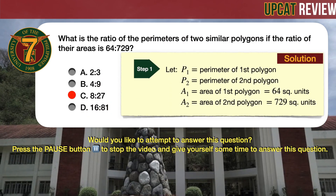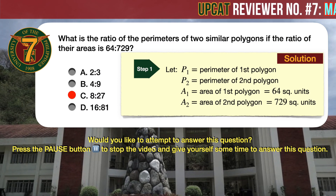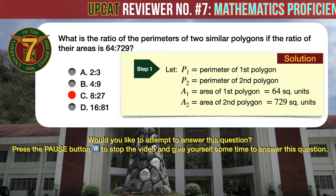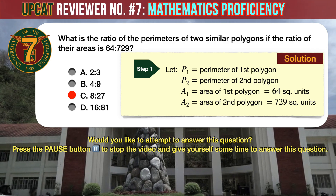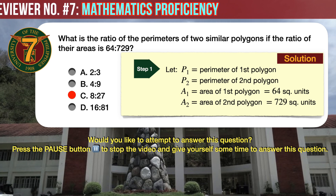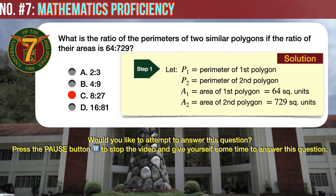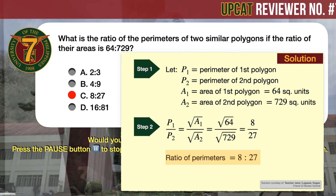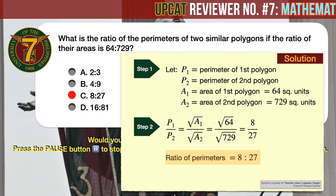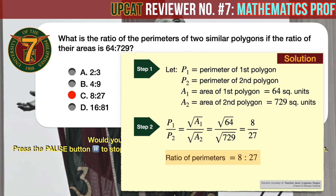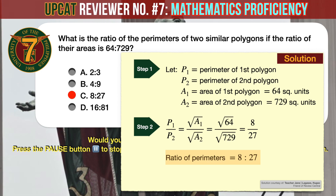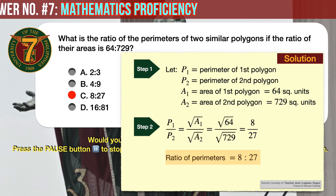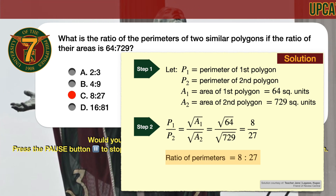Going back to our given problem: let P1 and P2 be the perimeters and A1 and A2 be the areas of the two polygons. Since the scale factor for area is the square of the scale factor for length or perimeter, we take the square roots of the given area ratio 64 to 729. The square root of 64 is 8 and the square root of 729 is 27. Therefore the ratio of the perimeters is 8 is to 27.